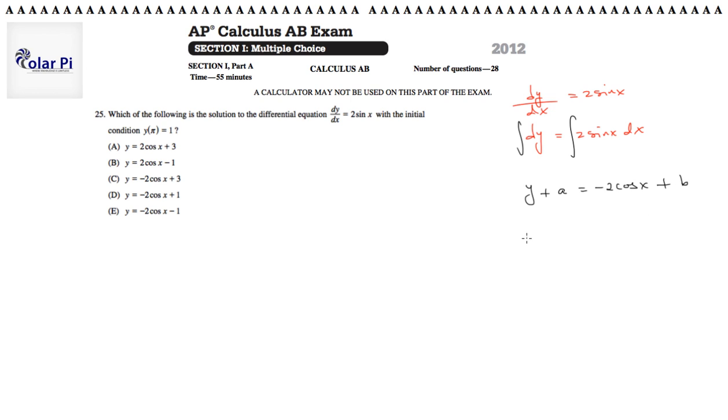So then y will have to equal negative 2 cosine x plus b minus a, combining the two constants on the right side. And let's say that this is equal to c. Then we have a general solution to the differential equation, and that is y equals negative 2 cosine x plus c.